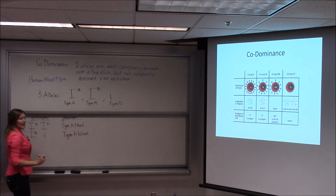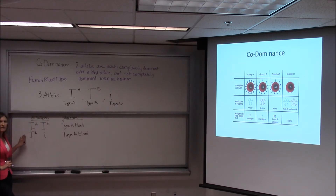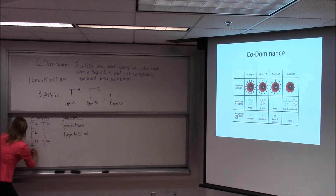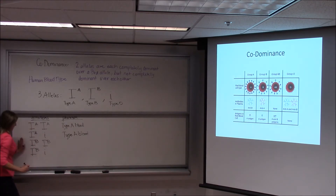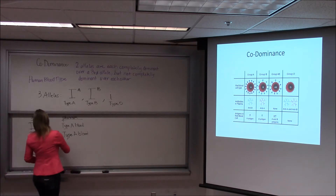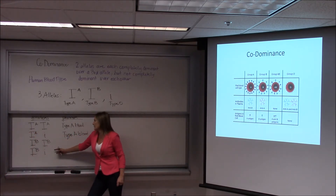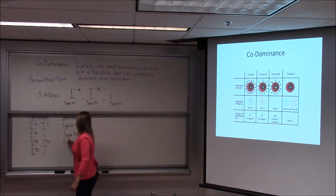The same thing goes for type B. You either got two type B alleles, or you got a B and an O. One of these is going to be homozygous for type B blood and one is heterozygous, but either way we have type B blood.